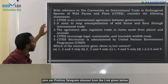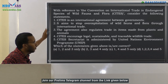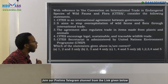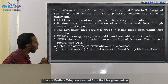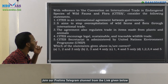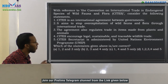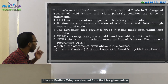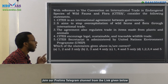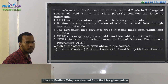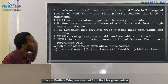First statement: CITES is an international agreement between governments. Second statement: it aims to stop overexploitation of wild fauna and flora through international trade. Third statement: the agreement also regulates trade in items made from plants and animals. Fourth: CITES ensures legal, sustainable and traceable wildlife trade. Fifth: CITES secretariat is administered by the United Nations Environment Programme (UNEP). These are the five statements given with regard to CITES.